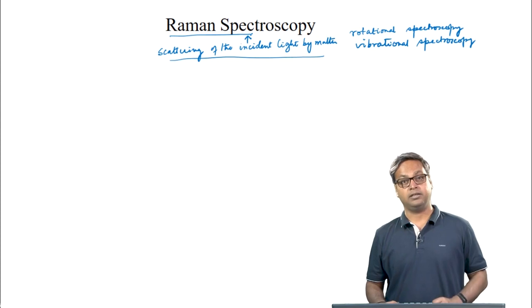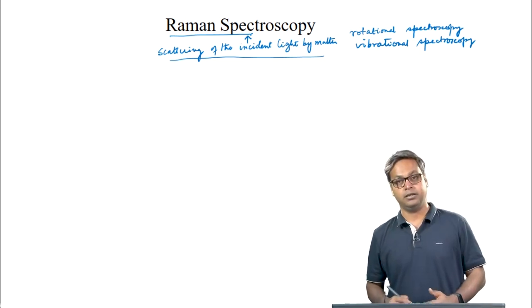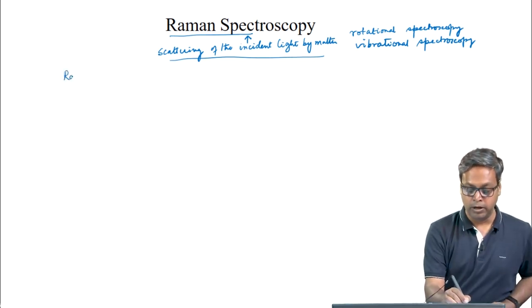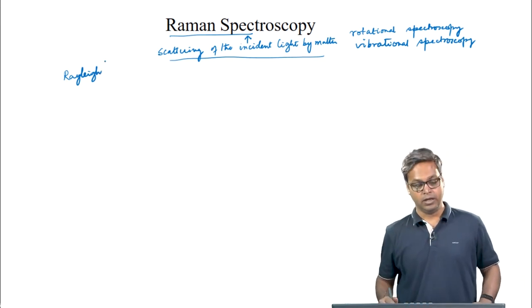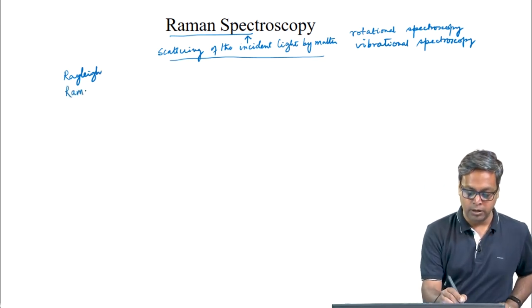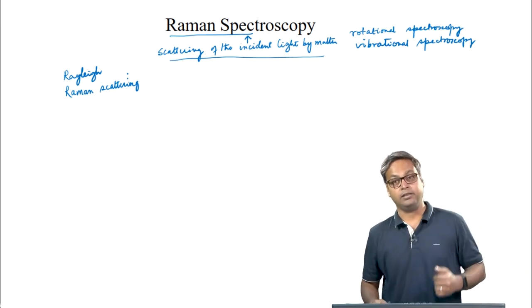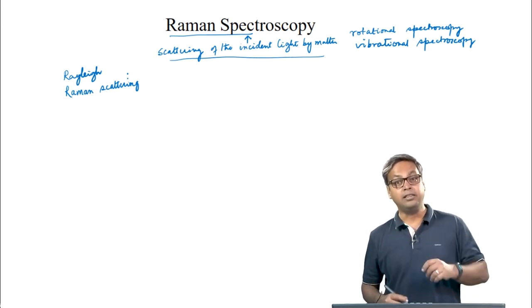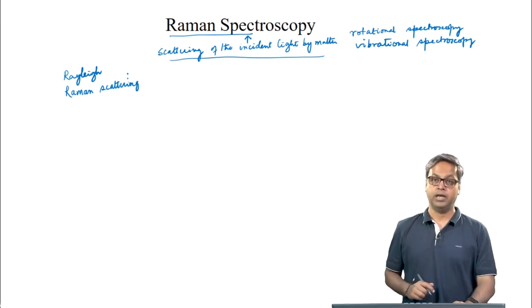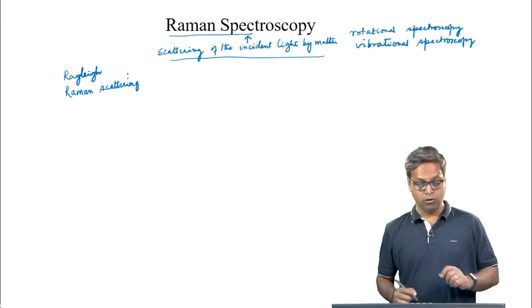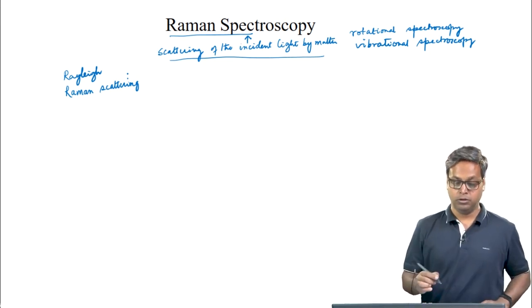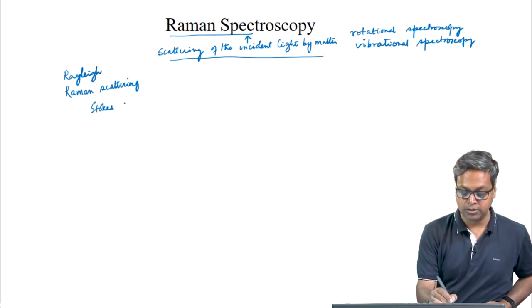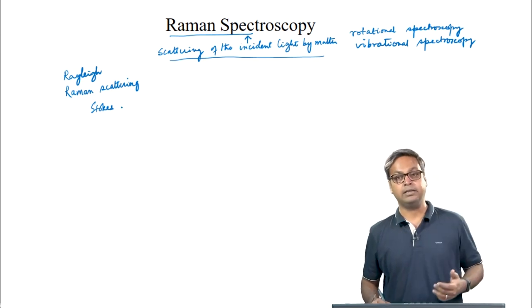In the last lecture, we saw that if the wavelength of the scattered light is the same as the wavelength of the incident light, it is known as Rayleigh scattering. However, in Raman scattering, the wavelength of the scattered light is either longer or shorter than that of the incident light. We also talked about Stokes scattering, where the wavelength is longer.